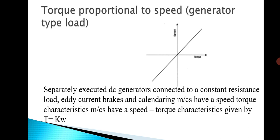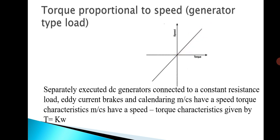Torque proportional to speed is the generator type of load. The torque is proportional to speed — when torque increases, speed also increases; when speed increases, torque also increases. Separately excited DC generators connected to a constant resistance load, eddy current brakes, and calendaring machines have speed-torque characteristics given by T equal to K into W. That is, torque is proportional to the speed.